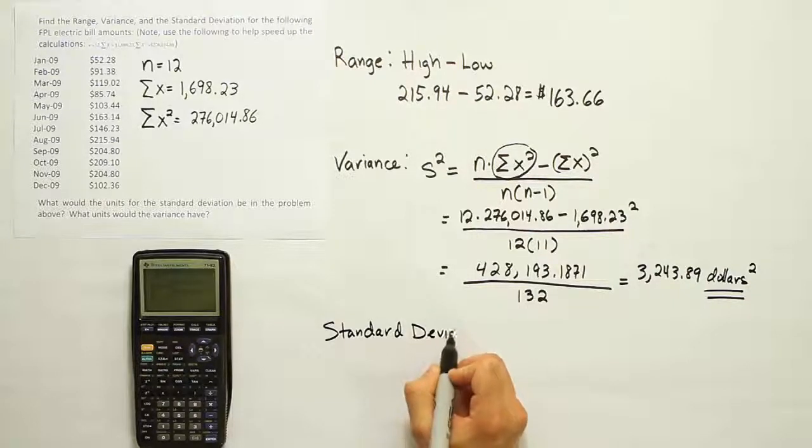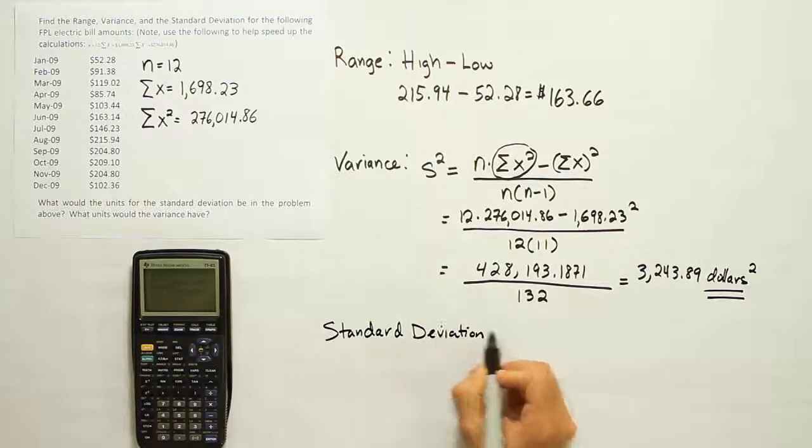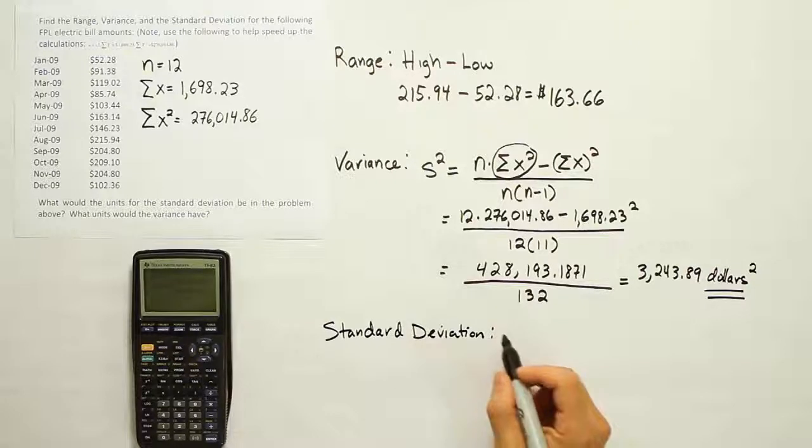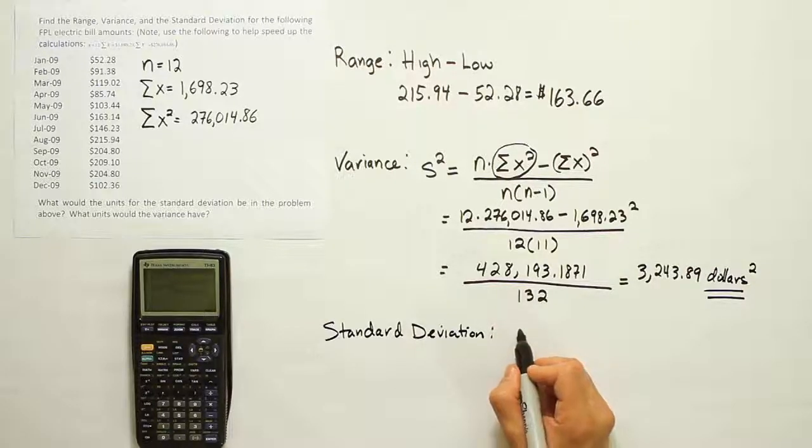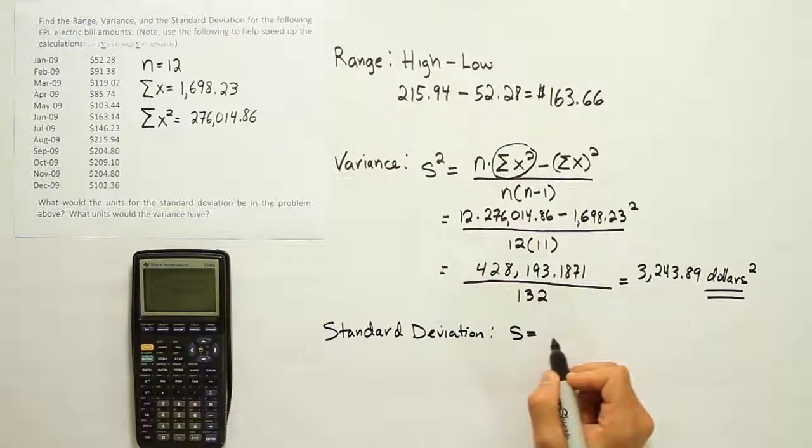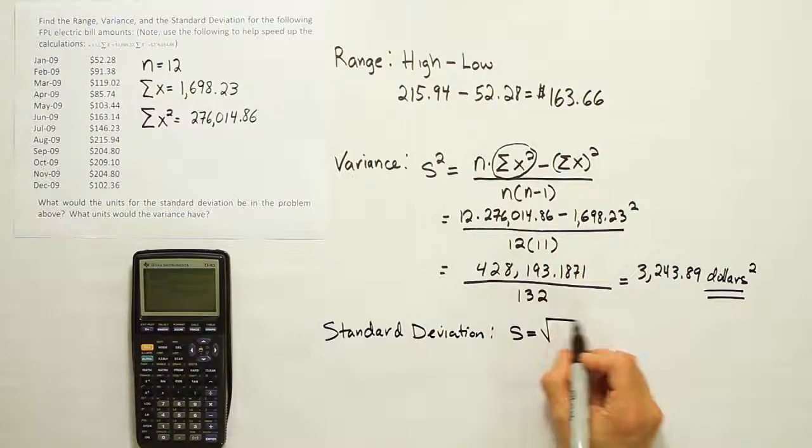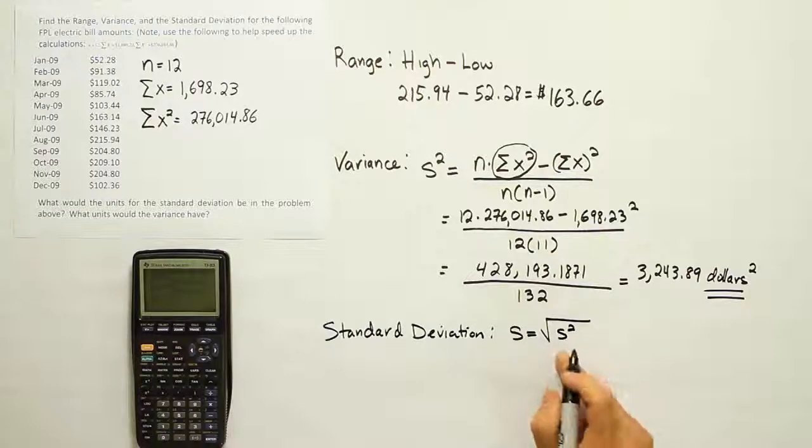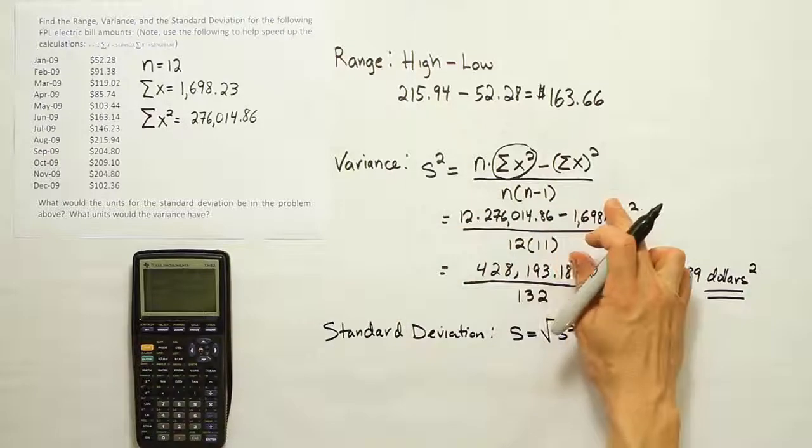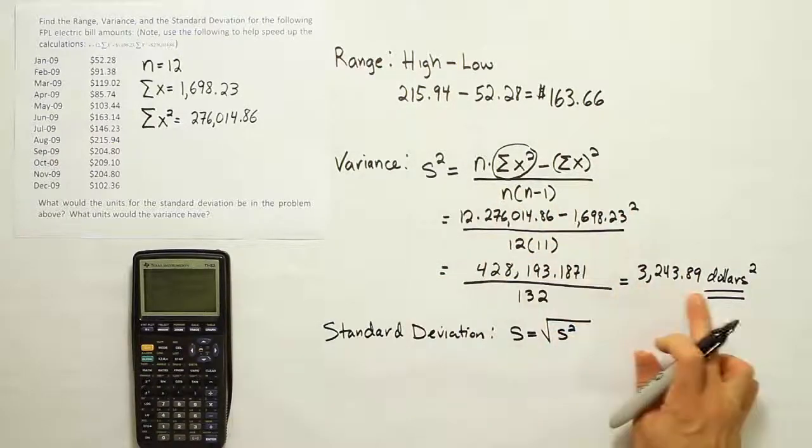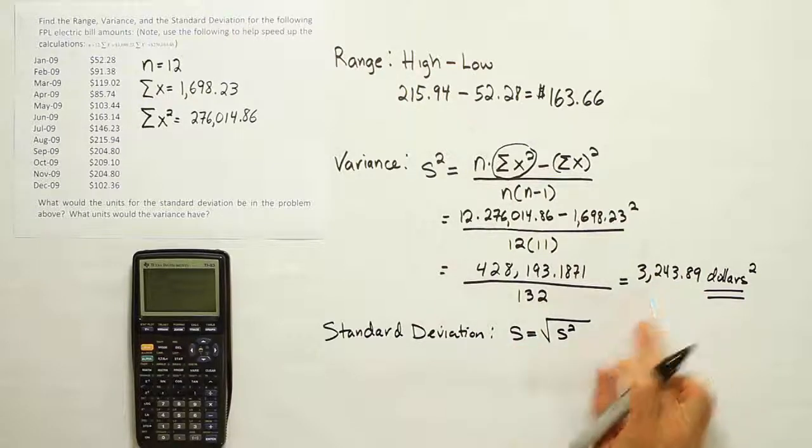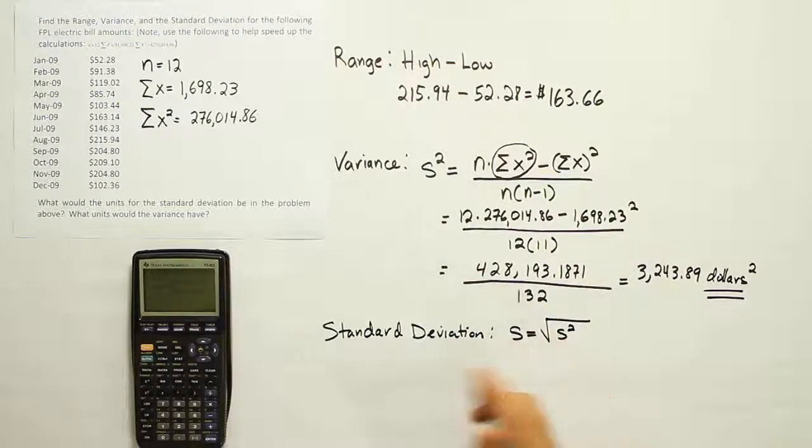So the standard deviation, the formula for, is S equals, and it's basically the square root of the variance. So we can actually just shorten it by saying the square root of S squared. Since we know what S squared is above here, and we've already calculated it, then if we just do the square root of that result, we'll end up with S. So let's do that.